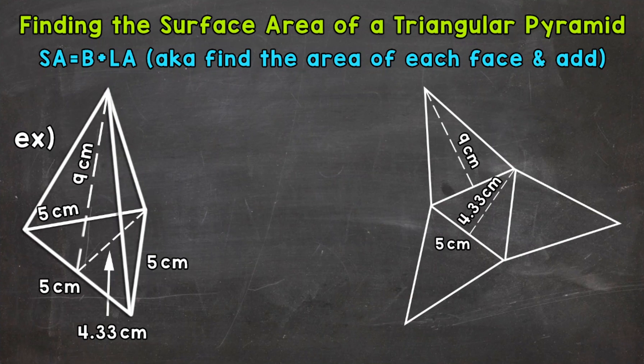When it comes to pyramids, we have the base and then the lateral faces. The lateral faces are the triangular faces that go around the pyramid. A triangular pyramid has four total faces — a triangular base and then three triangular lateral faces. We need to find the area of all of these and add them together to get the total surface area.